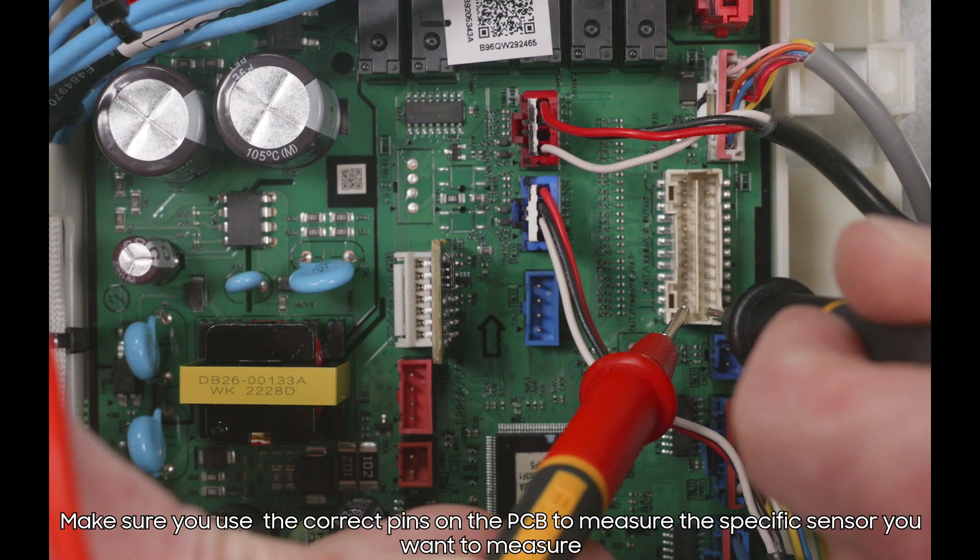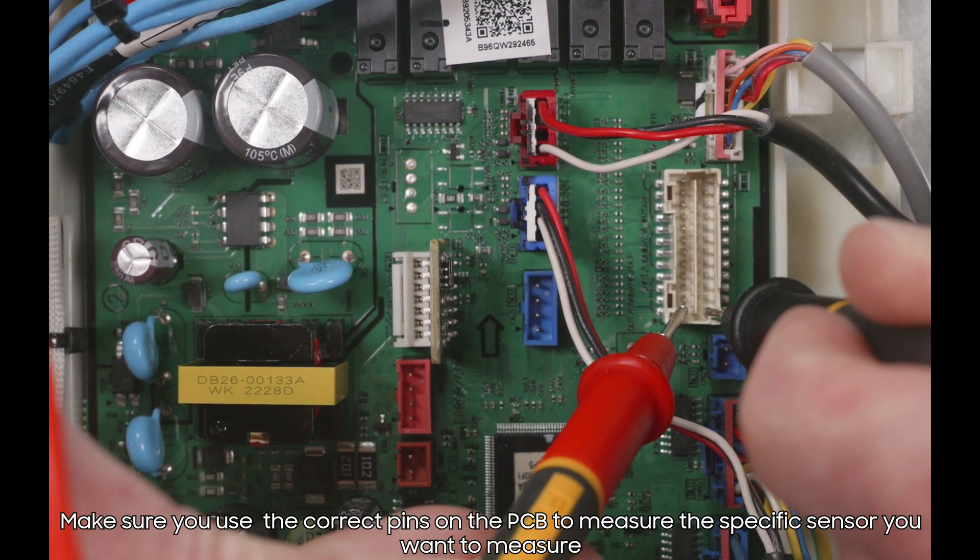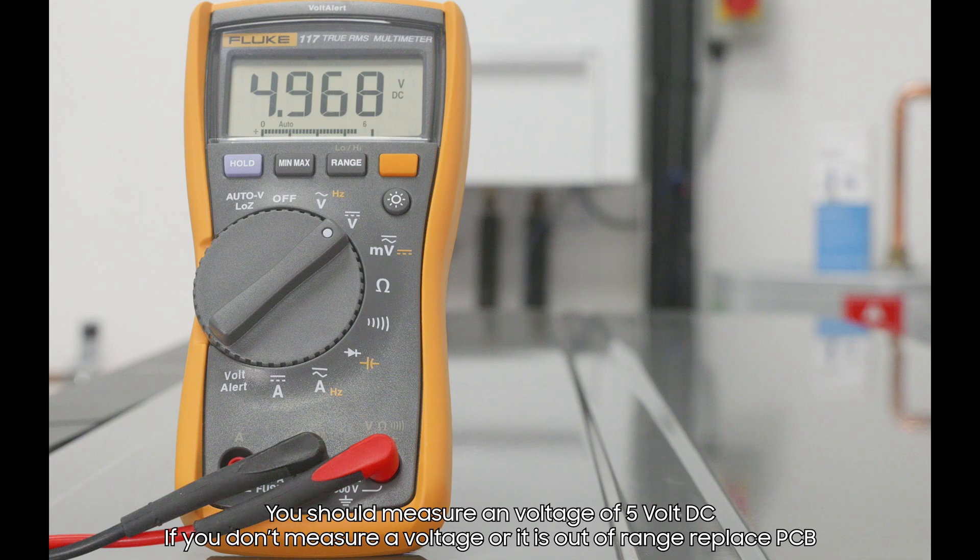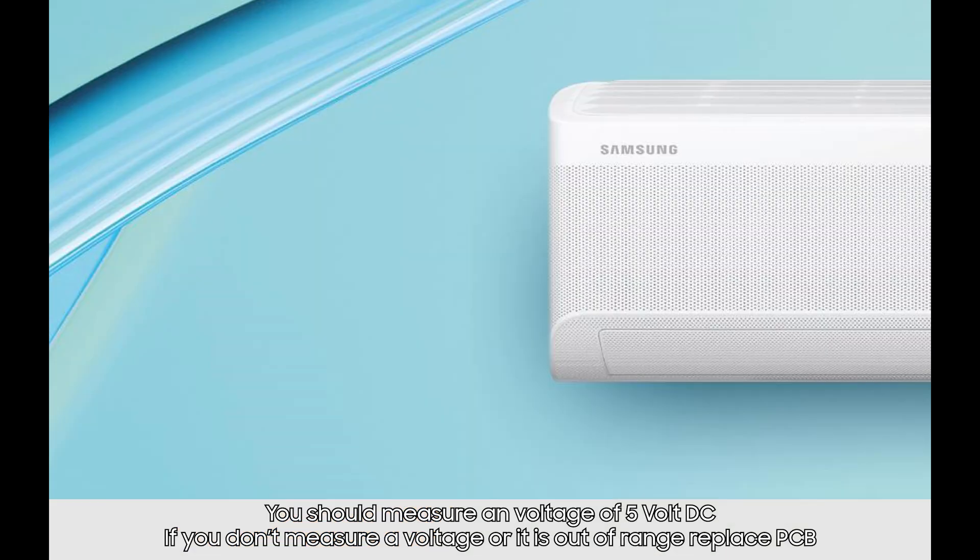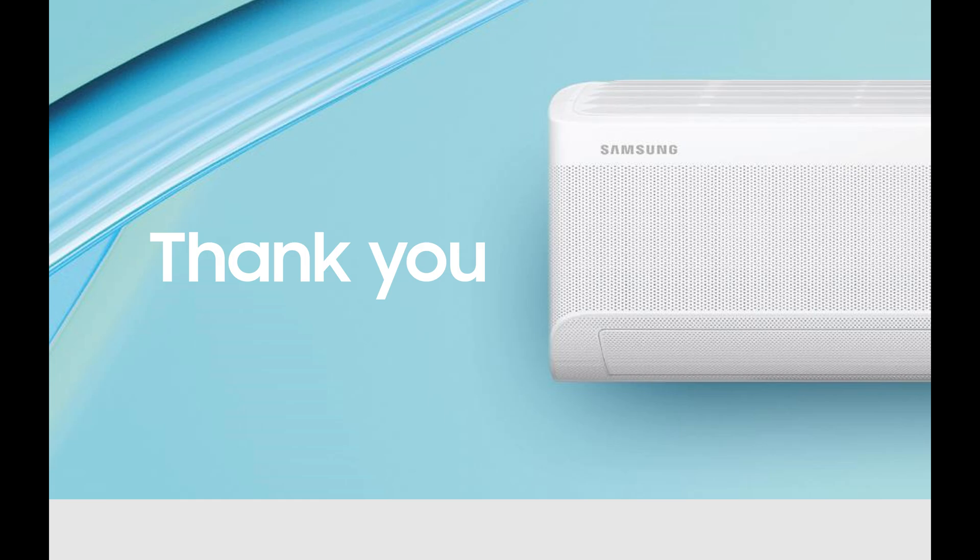Make sure you use the correct pins on the PCB to measure the specific sensor you want to measure. You should measure a voltage of 5 volts DC. If you don't measure voltage or a value out of range, replace the PCB.